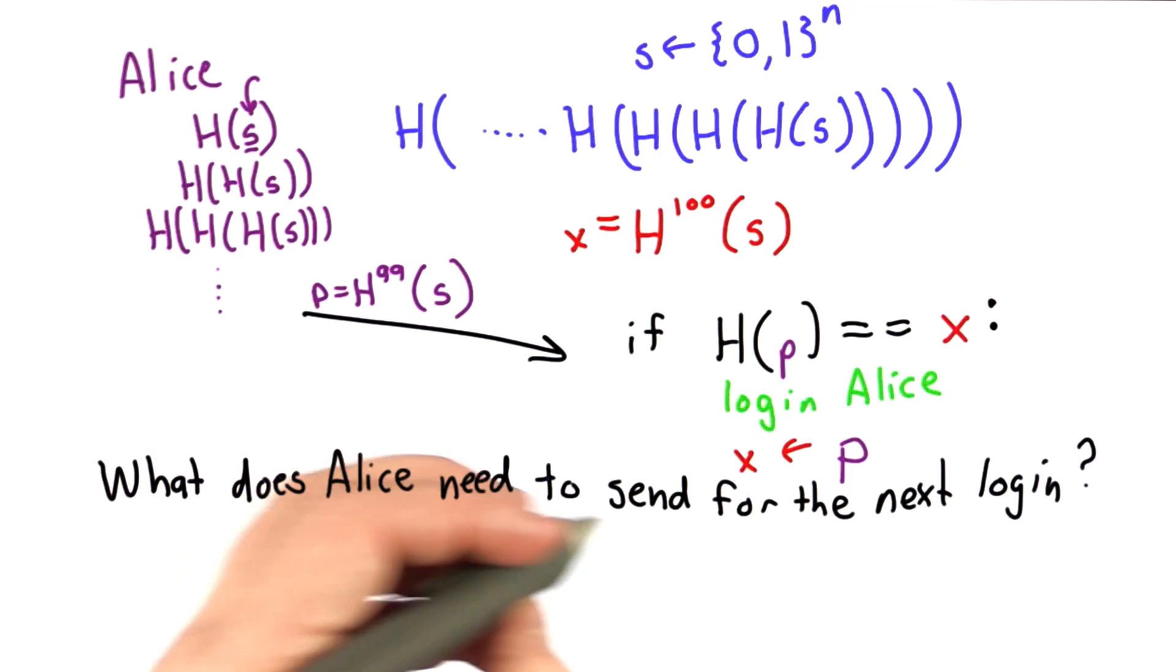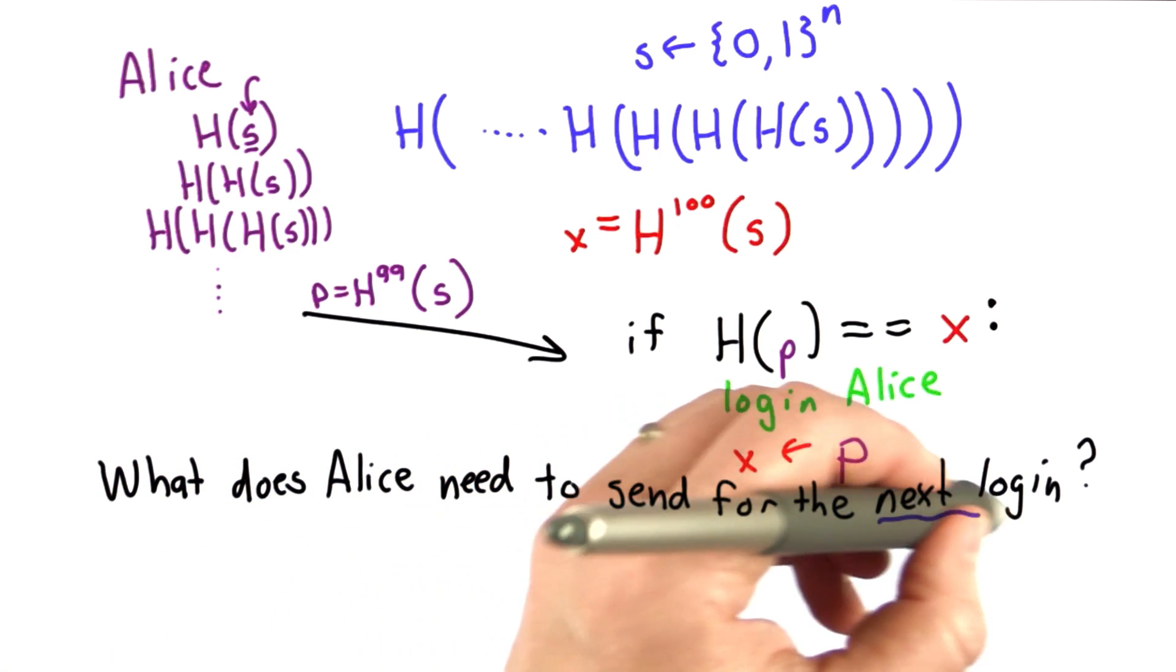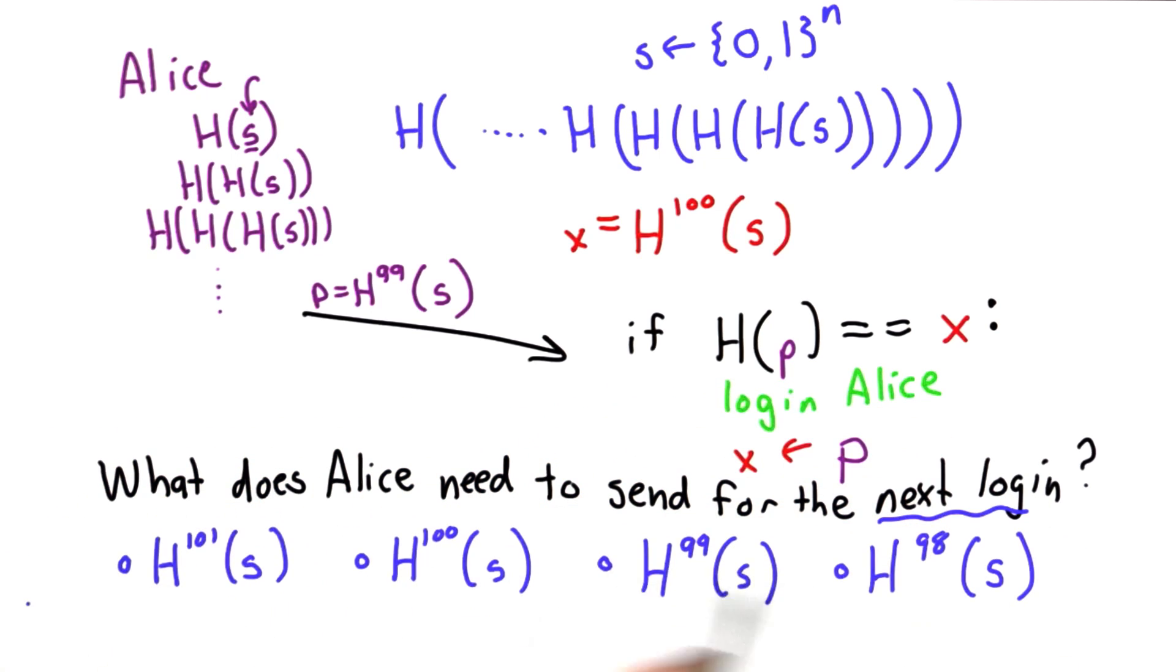So now the question is the next time Alice logs in, what does she need to send? Here's the choices, different number of times of doing the hash, starting from the secret s.